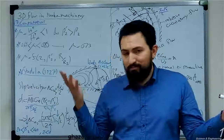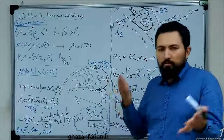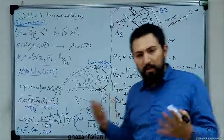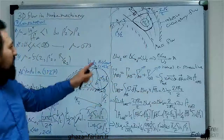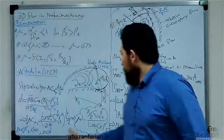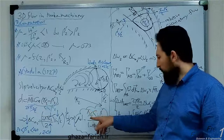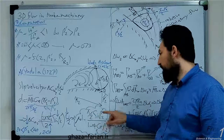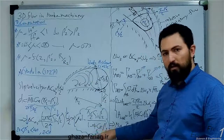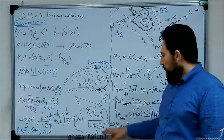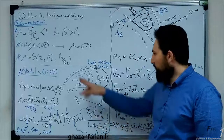Approximately 100 years ago, Stodola proposed this relation. About 20 to 30 years later, other researchers proved this relation using the relative eddy concept, as I will do in this section. The Stodola formula for the slip factor is: 1 minus pi over z times the sine of the blade angle at the outlet, over 1 minus phi times the tangent of beta prime sub 2, where z is the number of blades and beta prime sub 2 is the blade angle at the outlet.